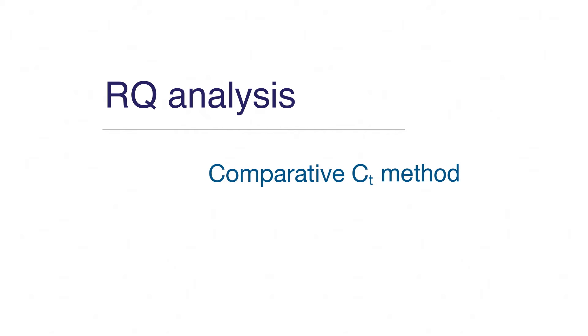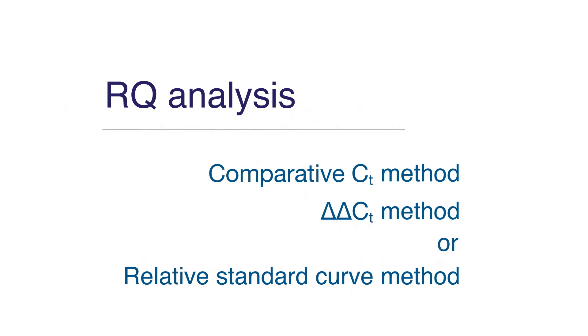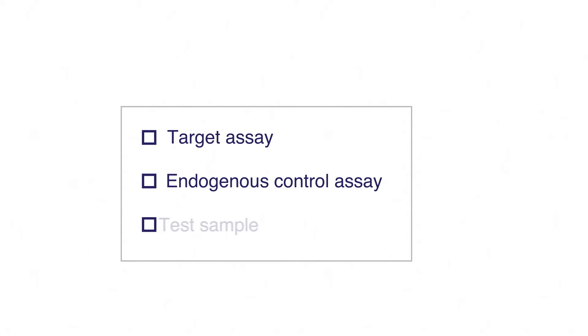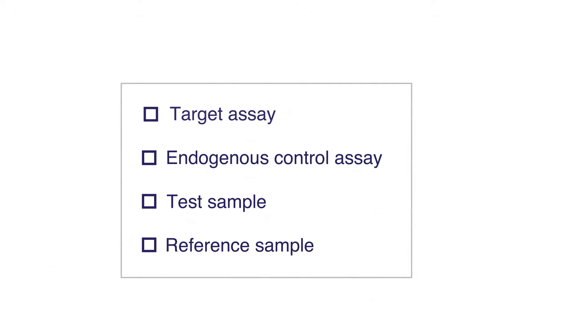For example, in a study of drug effects on gene expression, an untreated control sample serves as a reference for treated samples. You can perform RQ analysis using the comparative CT method — also known as the delta-delta CT — or the relative standard curve method. Either way, you'll need at least two assays: an assay for one target and an endogenous control to normalize the data, and at least one test sample and a reference sample.